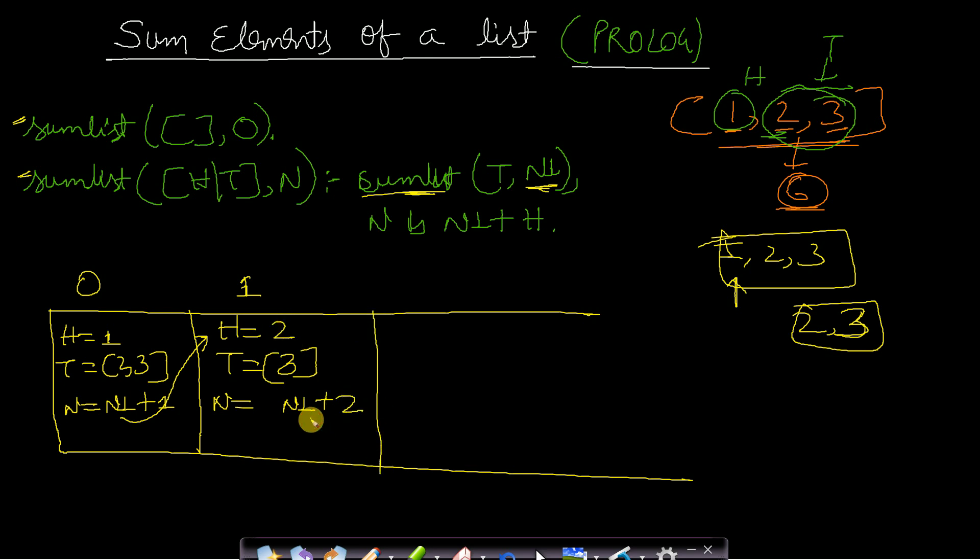This will make another recursive call. In this case we will have just one element because the tail had just one element in the previous call. Here, head will contain 3 while tail will have no elements. The sum n is n1 plus head, where head is 3.